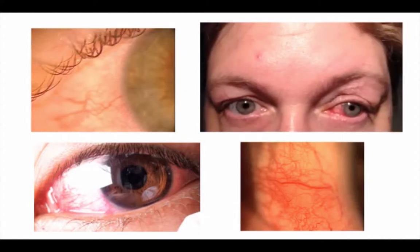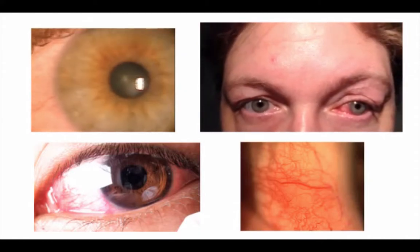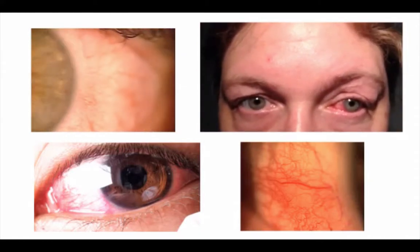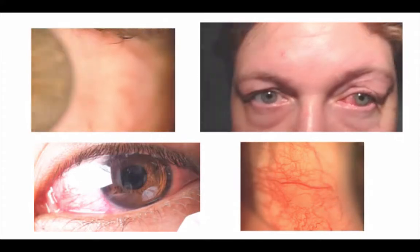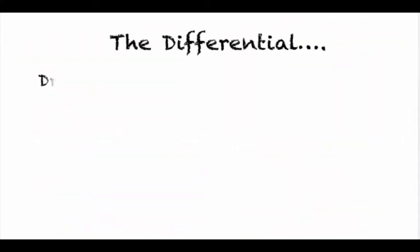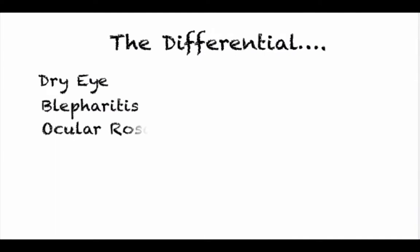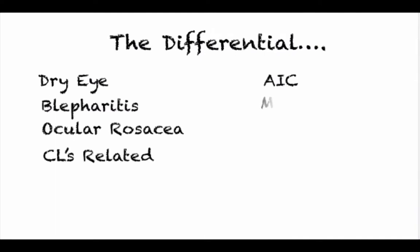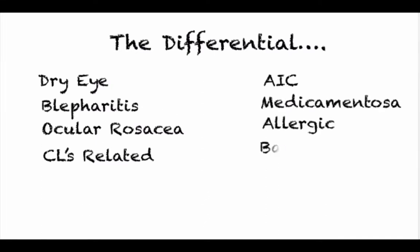Based on what we discover, we start narrowing the possibilities. Although not a complete differential of conditions that may cause a red eye, some of the more common reasons are seen here. Dry eye and blepharitis tend to be more chronic conditions and also tend to be bilateral, although the redness that they cause can be asymmetric in nature.